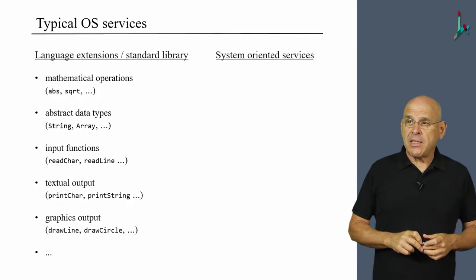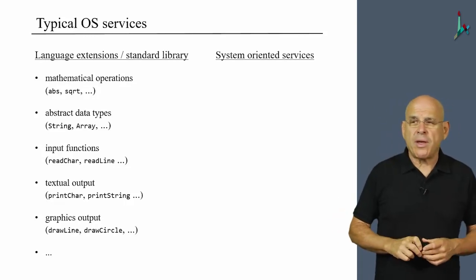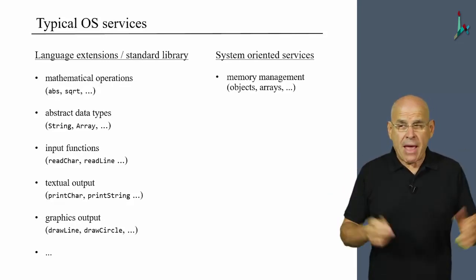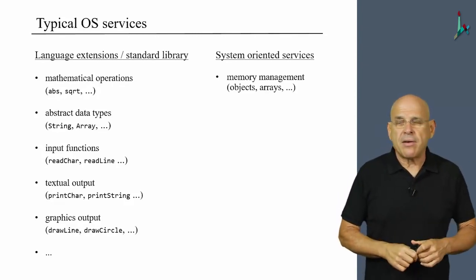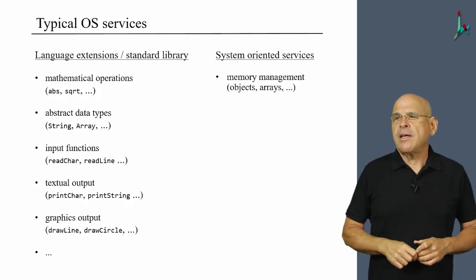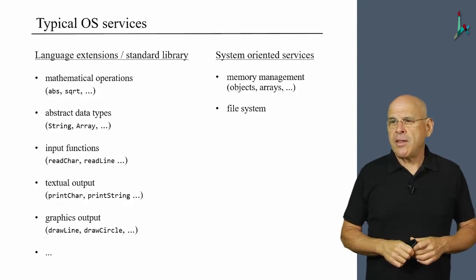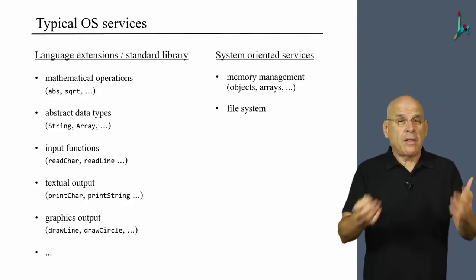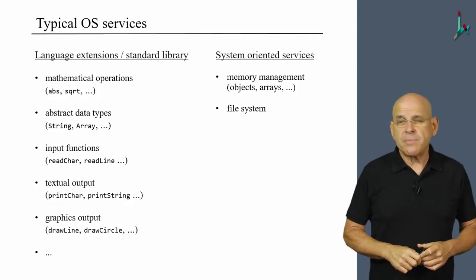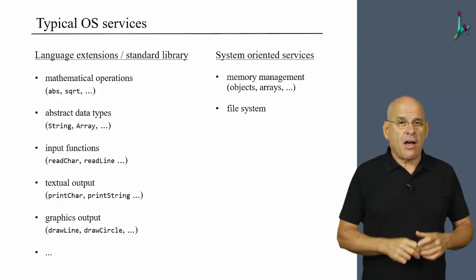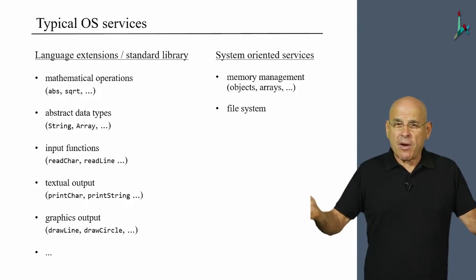In addition, the operating system must deliver system-oriented services. First, we have to manage host memory — the RAM — otherwise we won't be able to help the compiler create new objects and arrays. If we have mass storage like hard disks or flash memory, we have to manage that too. And for this we also need a file system abstraction — we'll need to support files, folders, and sub-folders — all the stuff people typically take for granted.